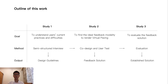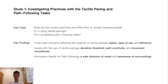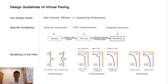To address this research question, we conducted three user studies. Firstly, we conducted semi-structured interviews with visually impaired people. Our goal was to understand their current practices and difficulties with tactile pavements and path-following tasks. Through the interviews, we identified the main concerns and issues affecting the usability of tactile pavements, and the information needs for path-following tasks. Based on these findings, we summarized a set of design guidelines for Virtual Paving.